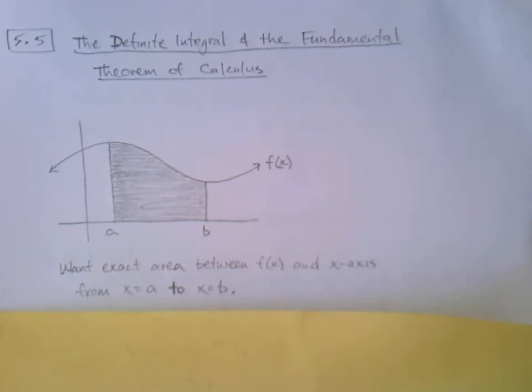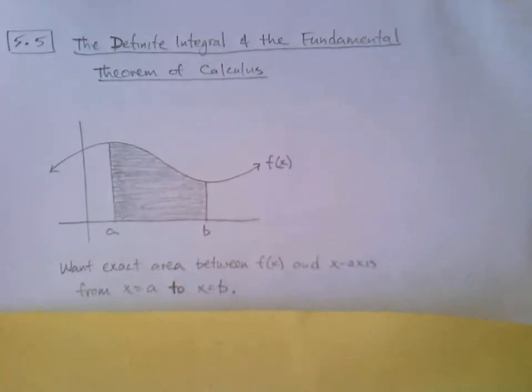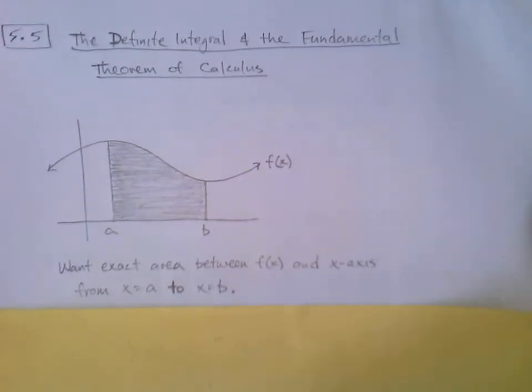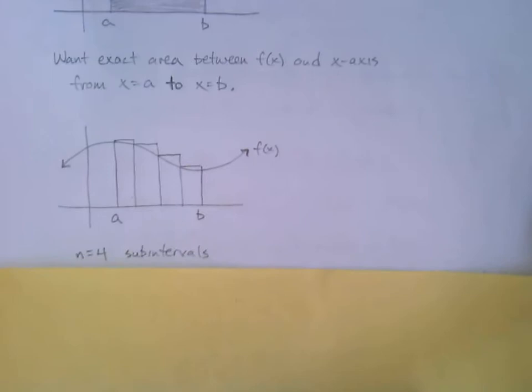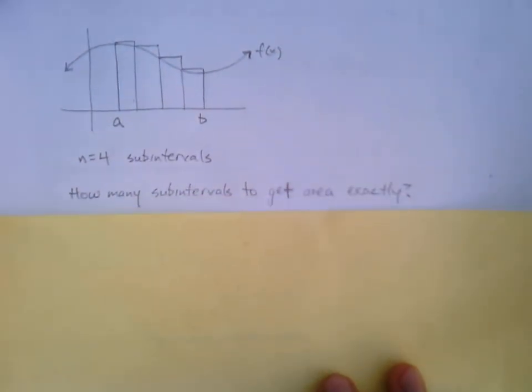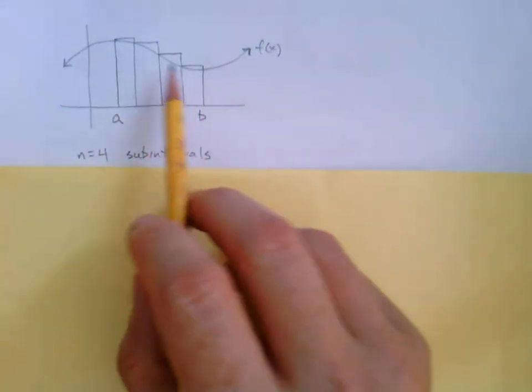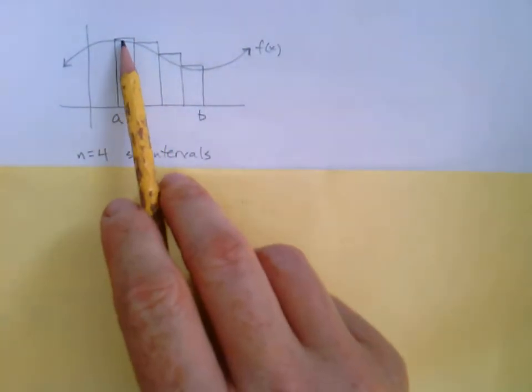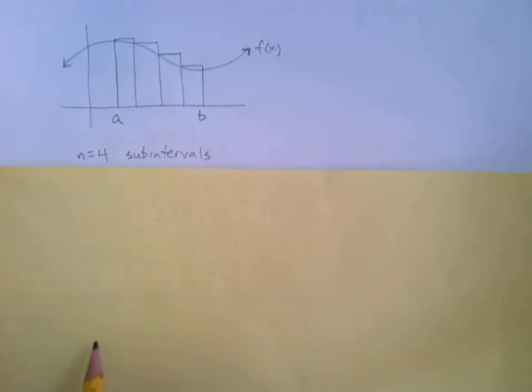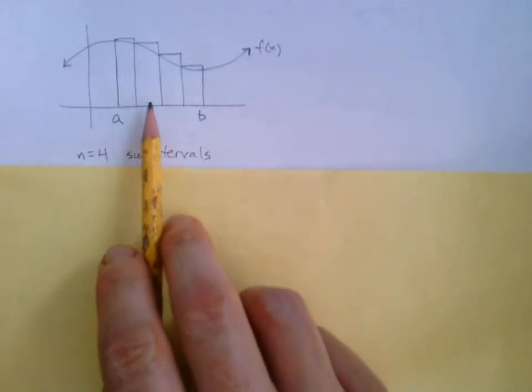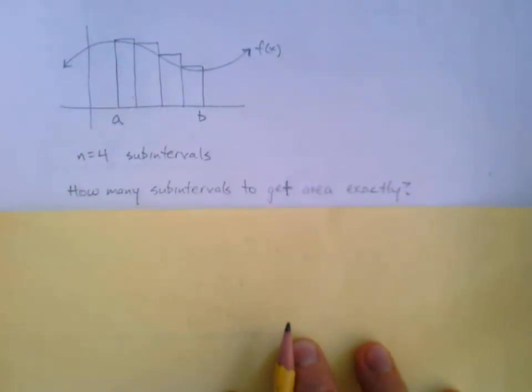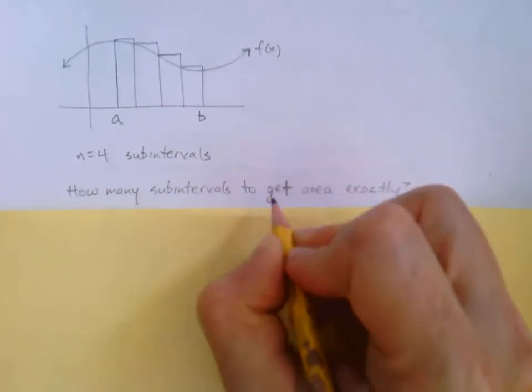We could get more accurate or less accurate, but now we're going to get it exactly, and it will be a faster approach. We're going to connect it with anti-derivatives and the indefinite integral. So what did we do in 5.4? A quick visual recap: you've got that function, you want to approximate the area between a and b. I divided this up into four rectangles and made them left rectangles. What's important is I said there are n sub-intervals. Here's the question: how many sub-intervals would we need to get that area exactly?